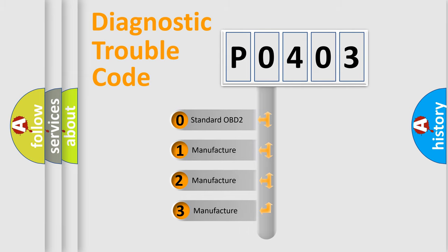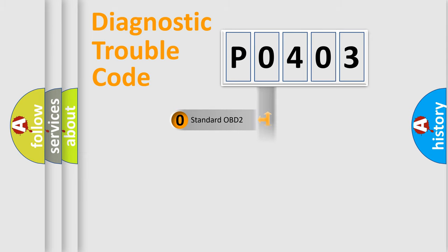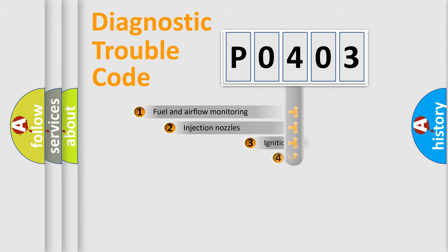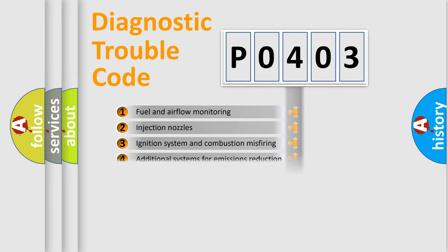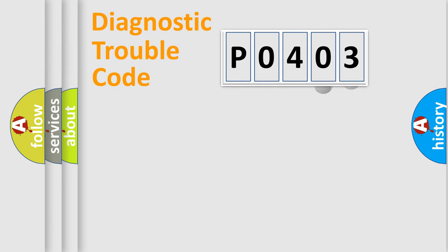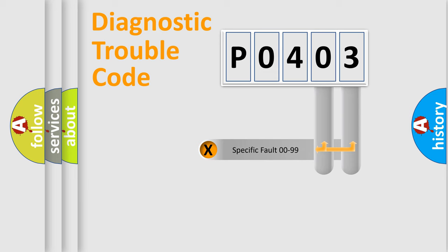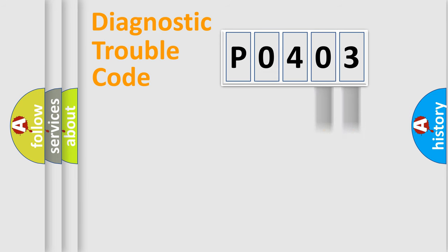If the second character is expressed as 0, it is a standardized error. In the case of numbers 1, 2, or 3, it is a more manufacturer-specific expression of the car-specific error. The third character specifies a subset of errors. The distribution shown is valid only for the standardized DTC code. Only the last two characters define the specific fault of the group.